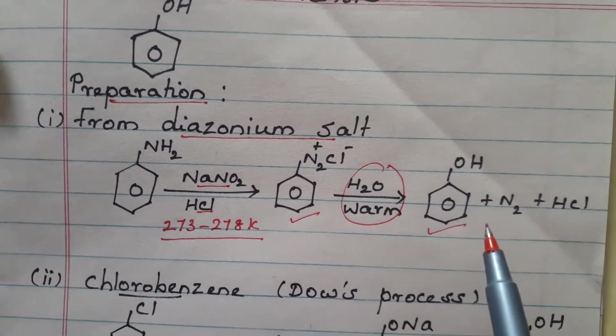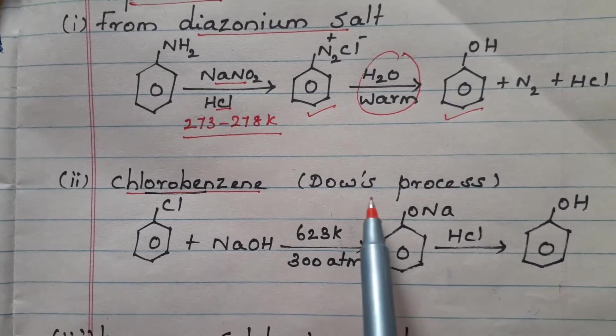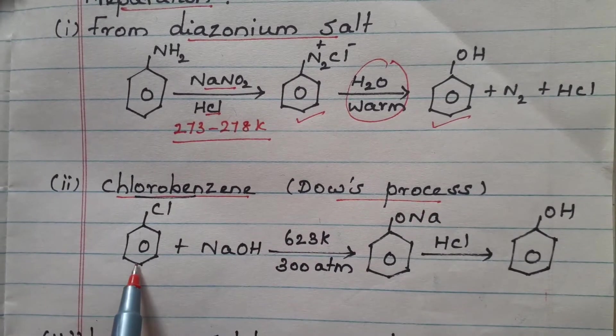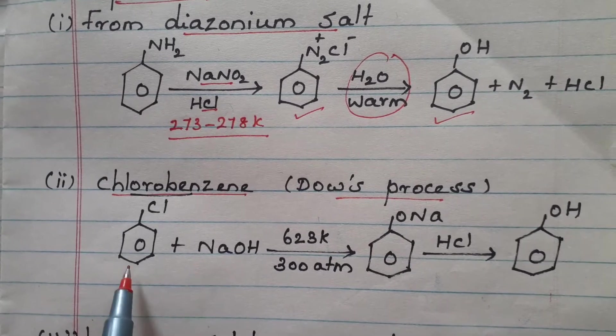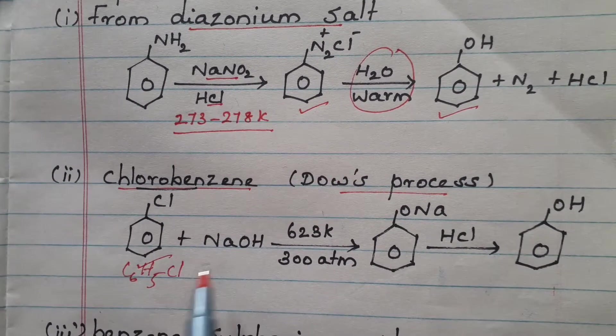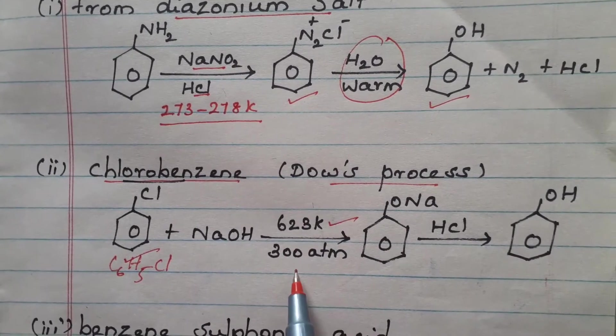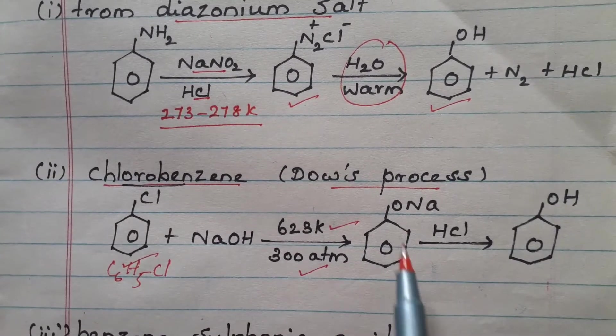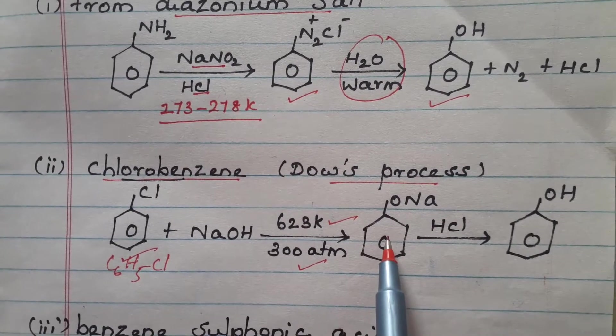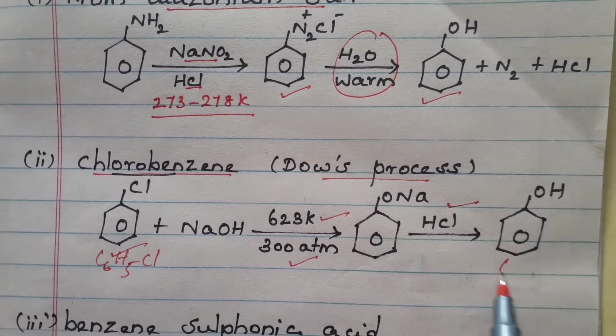Now let us see the next reaction, preparation of phenol from chlorobenzene. It is a very famous reaction, a naming reaction called the Dows process. When chlorobenzene, C6H5Cl, is treated with sodium hydroxide at 623 Kelvin and 300 atmospheric pressure, it first produces sodium phenoxide, an intermediate product. When this intermediate is treated with HCl, it will produce phenol C6H5OH.